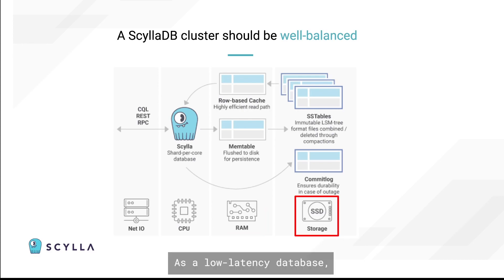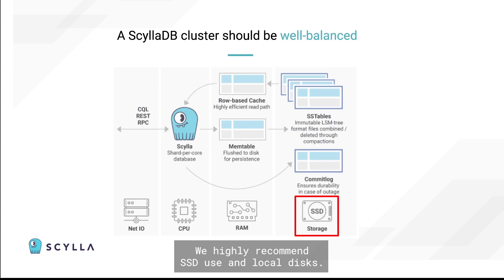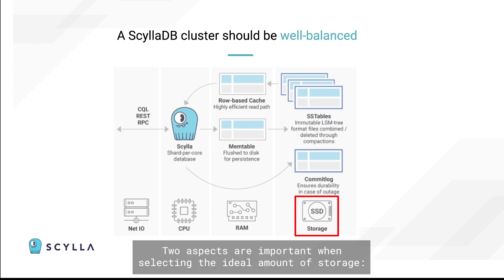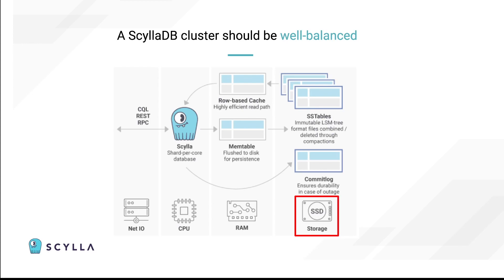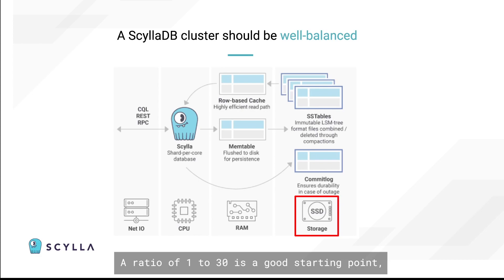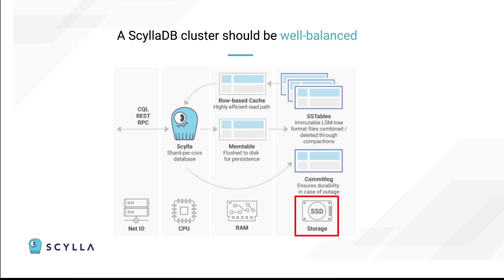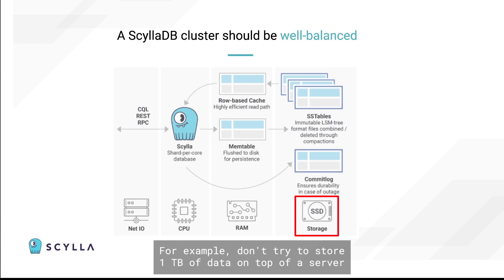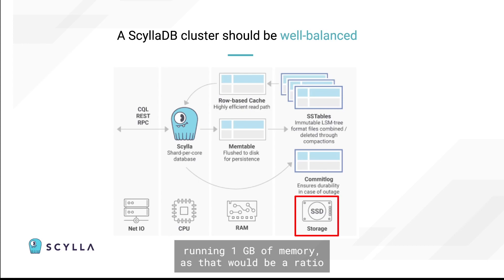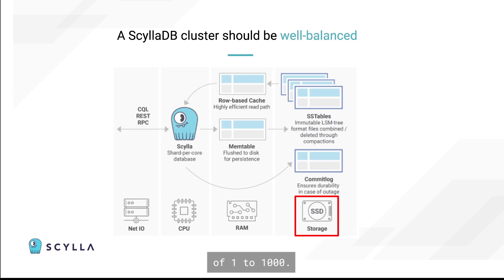As a low latency database, we highly recommend SSDs and local disks. Two aspects are important when selecting the ideal amount of storage. First, ensure that you maintain a reasonable ratio of memory to storage. A ratio of 1 to 30 is a good starting point, but we definitely do not recommend going past a 1 to 100 ratio. For example, don't try to store 1 terabyte of data on top of a server running 1 gigabyte of memory, as that would be a ratio of 1 to 1000.